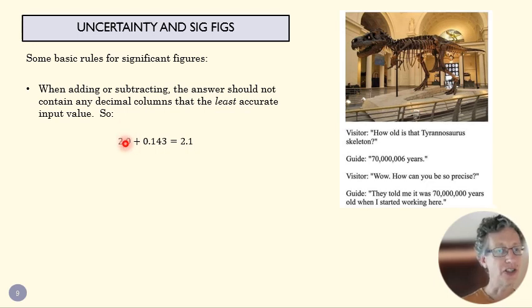So if I add 2 to 0.143, my answer is not going to be any more accurate than 2.1. Because this suggests an uncertainty ranging from 1.95 to 2.05. So, these numbers over here are becoming less meaningful.